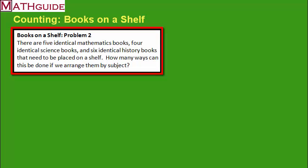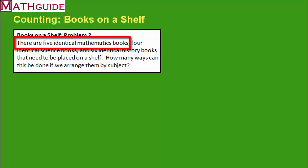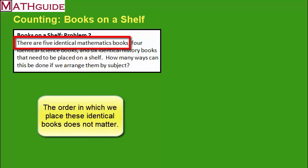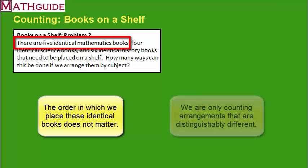Here's our second problem. There are five identical math books, four identical science books, and six identical history books — all need to be placed on a shelf. How many ways can this be done if we arrange them by subject? If the books are all identical, switching their order doesn't create a distinguishably different arrangement, so we don't count rearrangements of identical books.